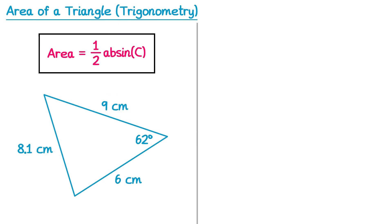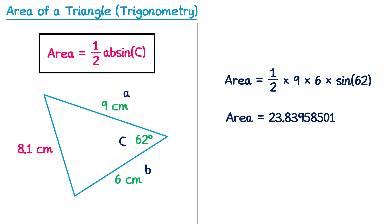For this triangle we look for two sides and the angle in between them. We have all three sides but only one angle. We use the angle of 62° and the two sides either side of it — the 9 and the 6 — labelling them as lowercase a and b, and the angle as capital C. We don't need the 8.1. Substituting into the formula: area equals one half multiplied by 9 multiplied by 6 multiplied by sine 62. Typing this into the calculator and rounding to one decimal place gives 23.8cm squared.